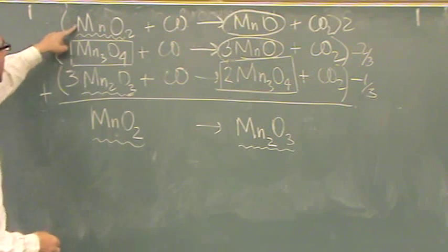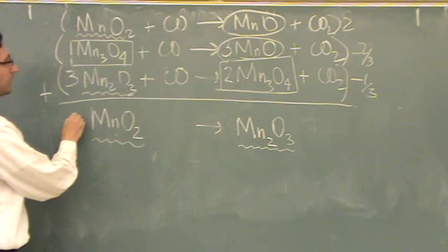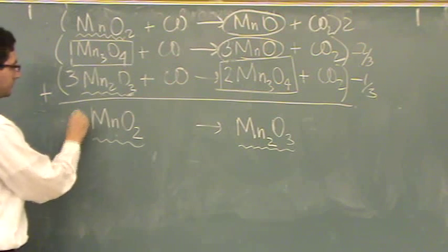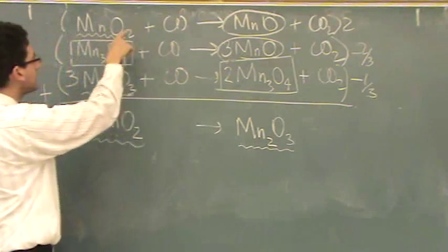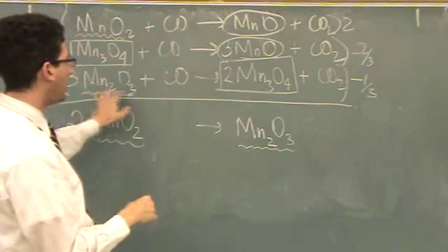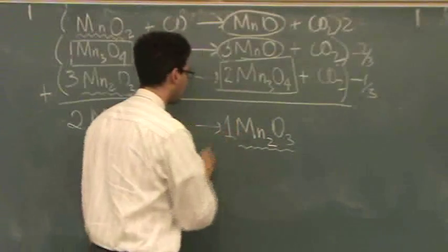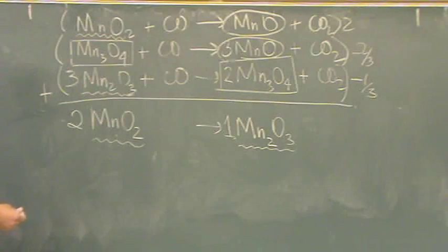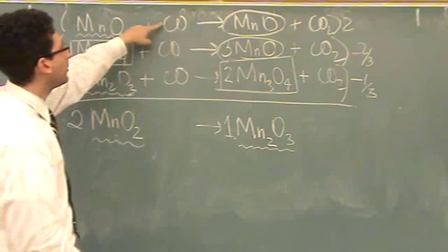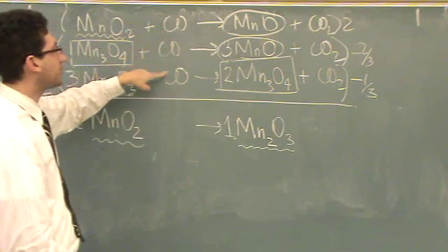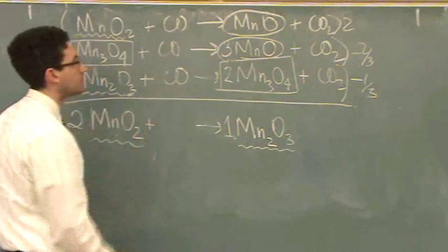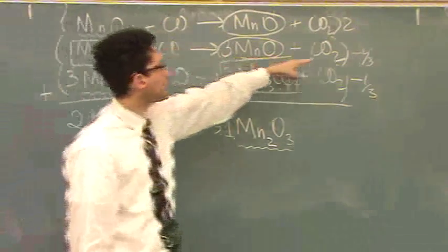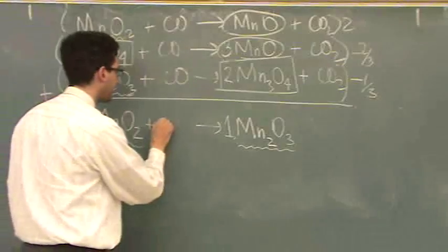So, I'm going to have two of these. I'm going to have one of these. All the other manganese are going to cancel. I just want to see what happens with the CO₂. What is two minus two-thirds minus a third? What is that? Two minus two-thirds minus a third. One. Good.